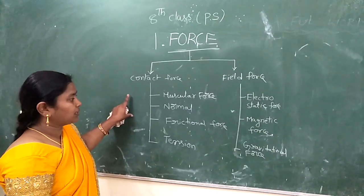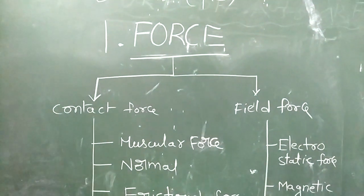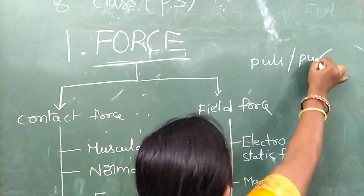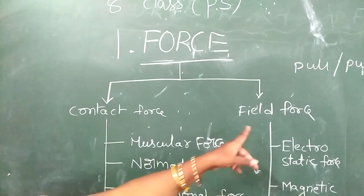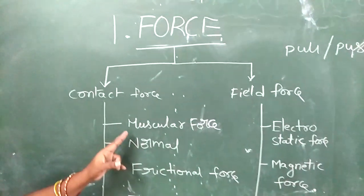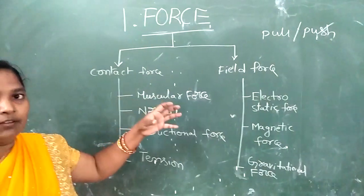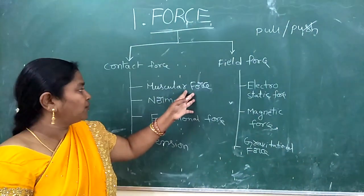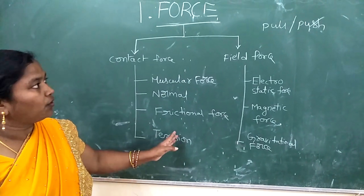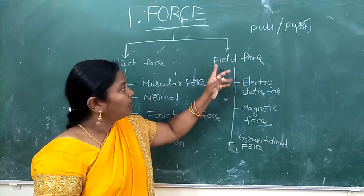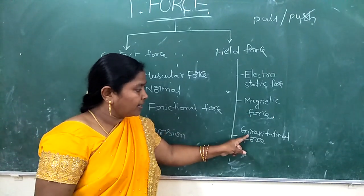Let me repeat the types of force. Force has two main types: pull and push. Forces are also classified as contact force and non-contact force. Contact force has four types: muscular force — when we apply force with our muscles; normal force; frictional force; and tension. Non-contact force has three types: electrostatic force, magnetic force, and gravitational force. The difference between non-contact and contact forces is that contact forces require physical contact, while non-contact forces act at a distance.